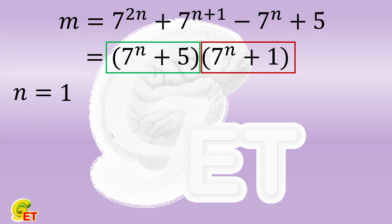When n is equal to 1, the two factors are 12 and 8, which are divisible by 6 and 2 respectively.